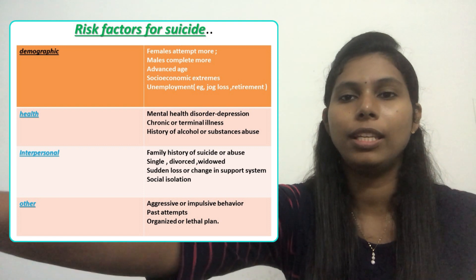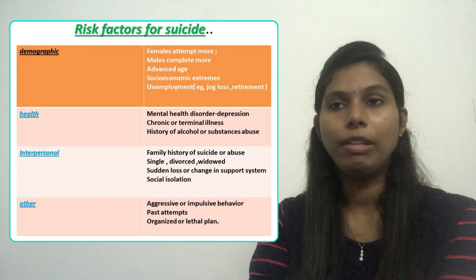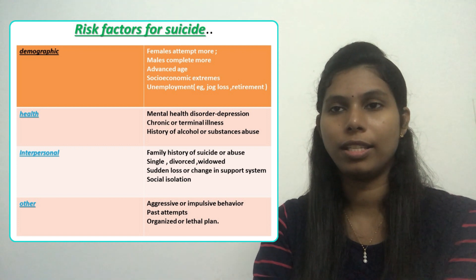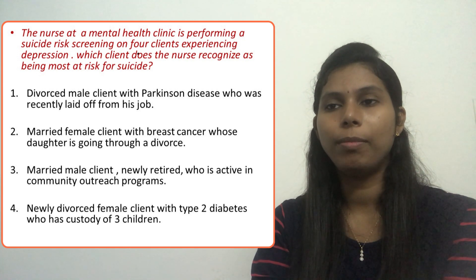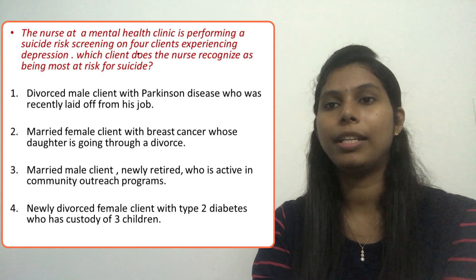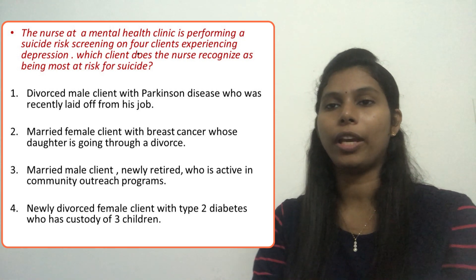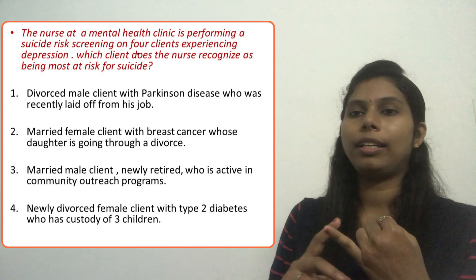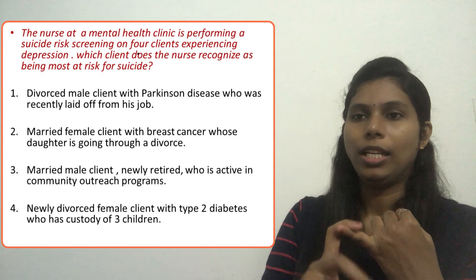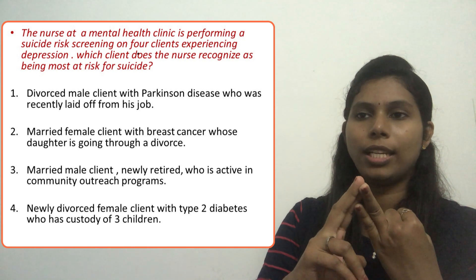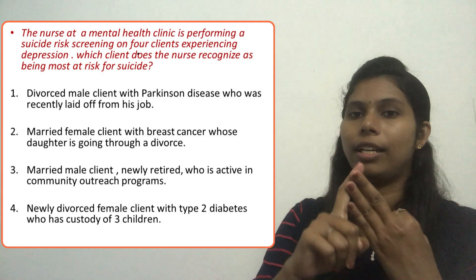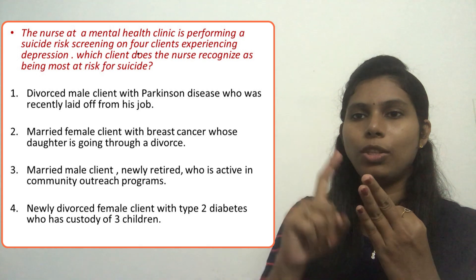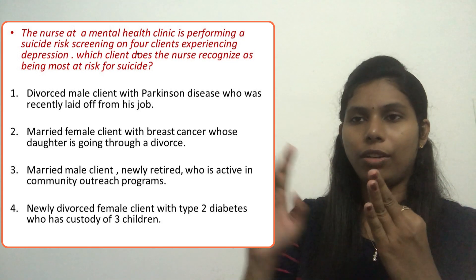Now, based on these risk factors, we'll determine which client has the most risk factors. Looking at option four — the newly divorced female client with type 2 diabetes: the first risk factor is she is divorced, the second is she has a chronic illness (type 2 diabetes), and the third is her depression. So option four has three risk factors.